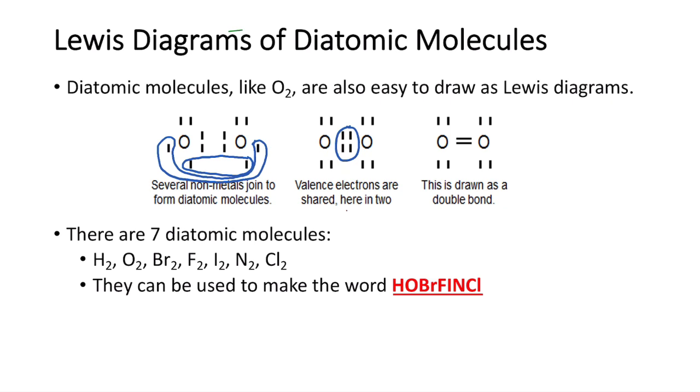There are seven diatomic molecules which we are expected to know. Hydrogen H2, oxygen O2, bromine Br2, fluorine gas F2, iodine I2, nitrogen gas N2 which makes up the majority of our atmosphere, and chlorine gas Cl2.